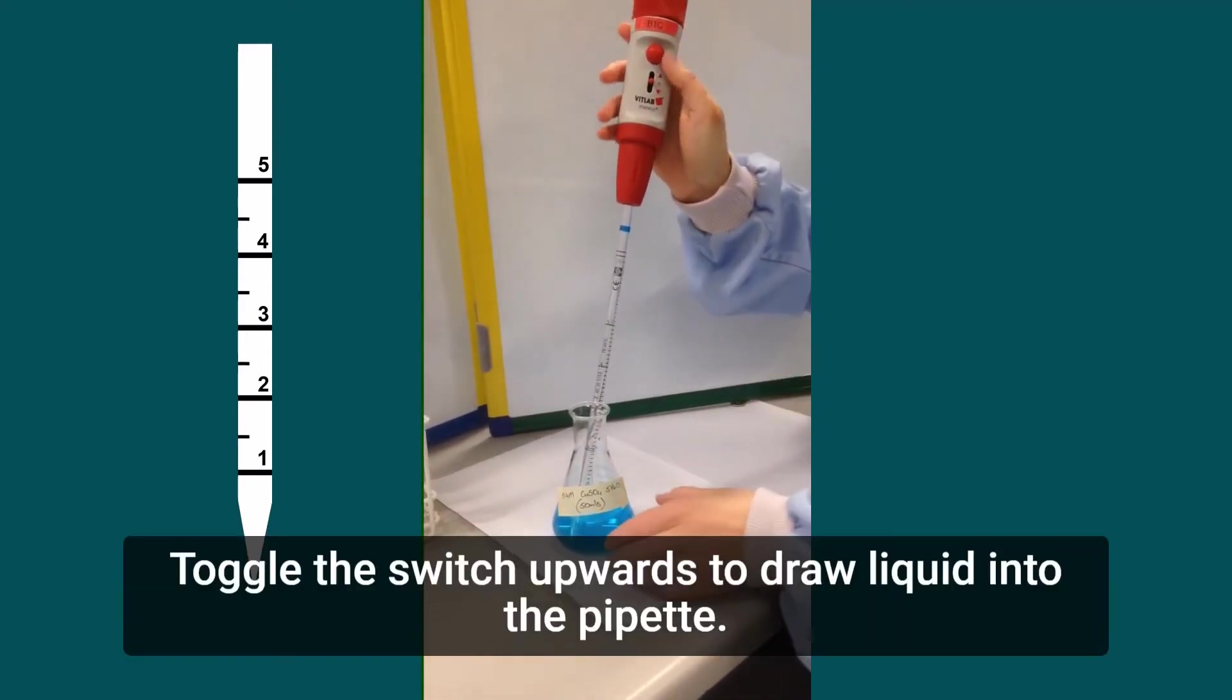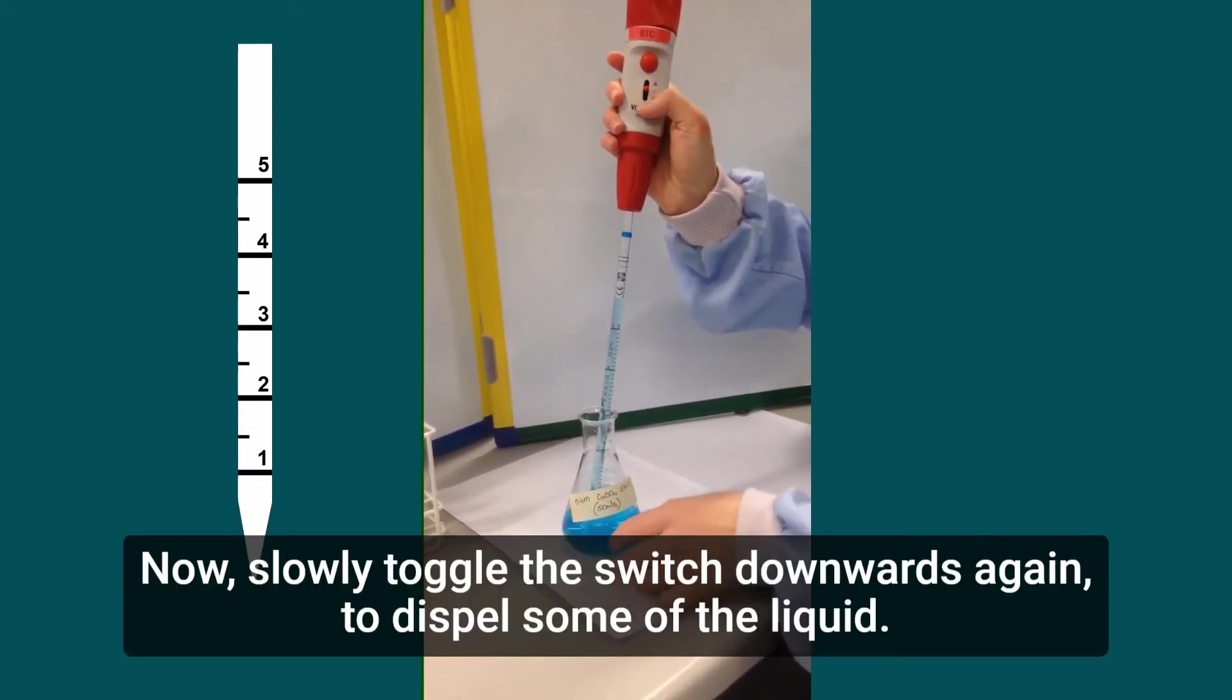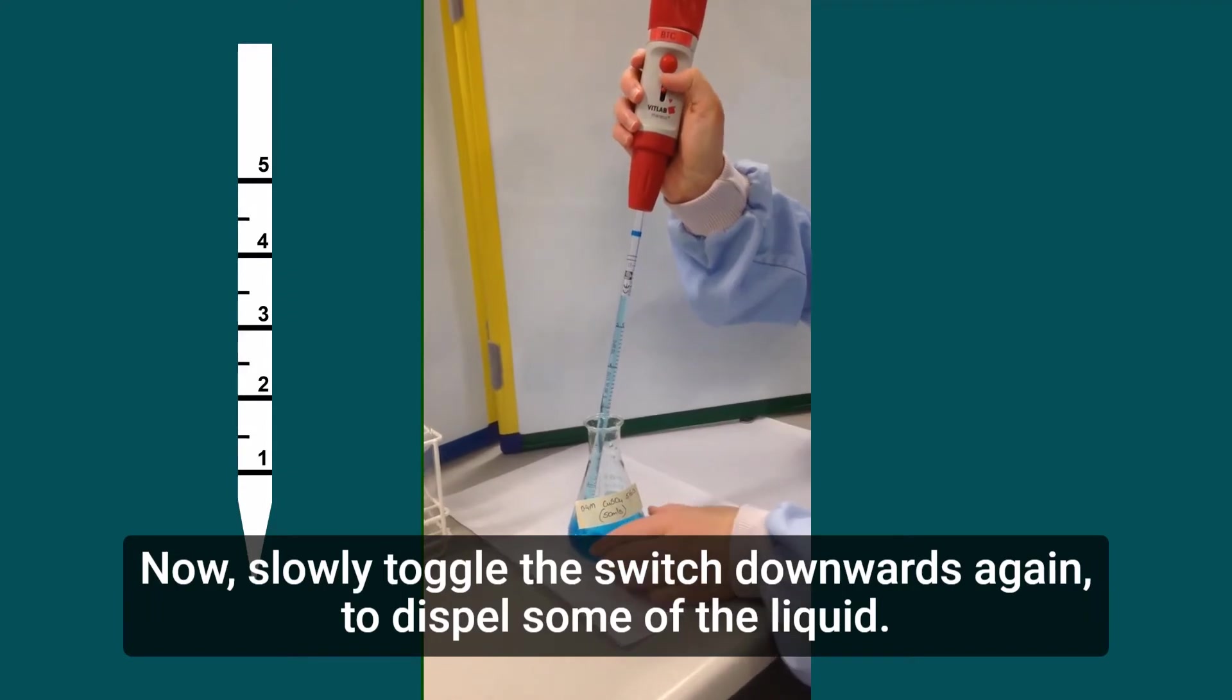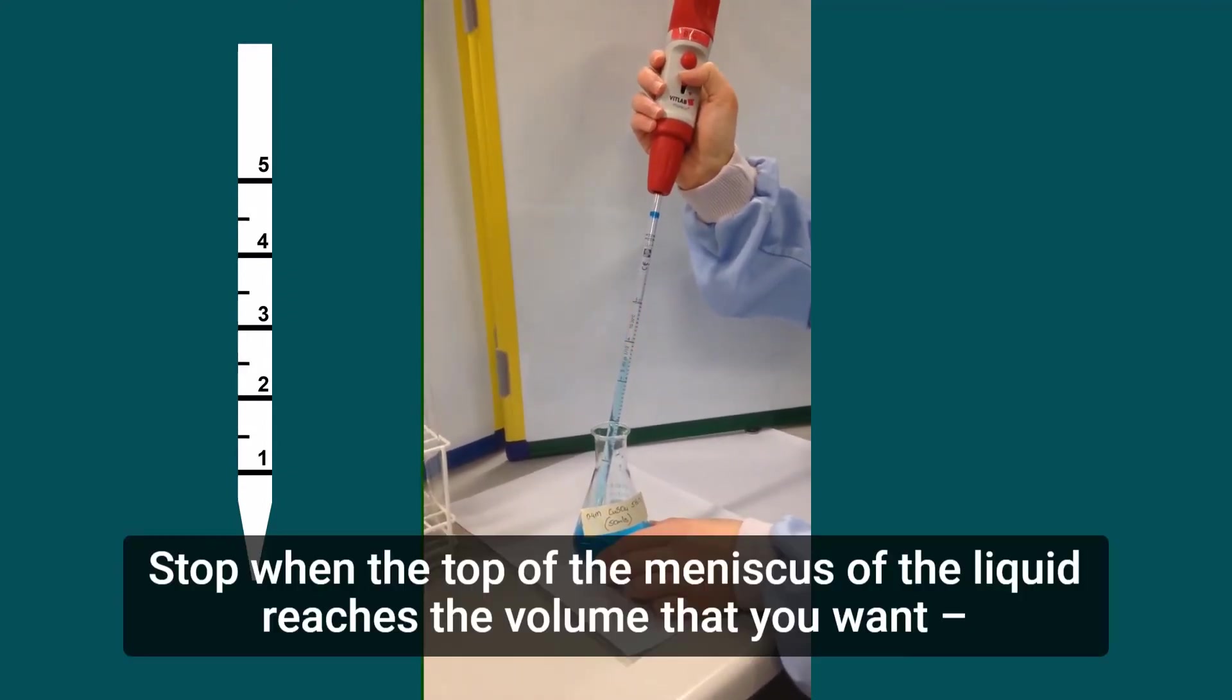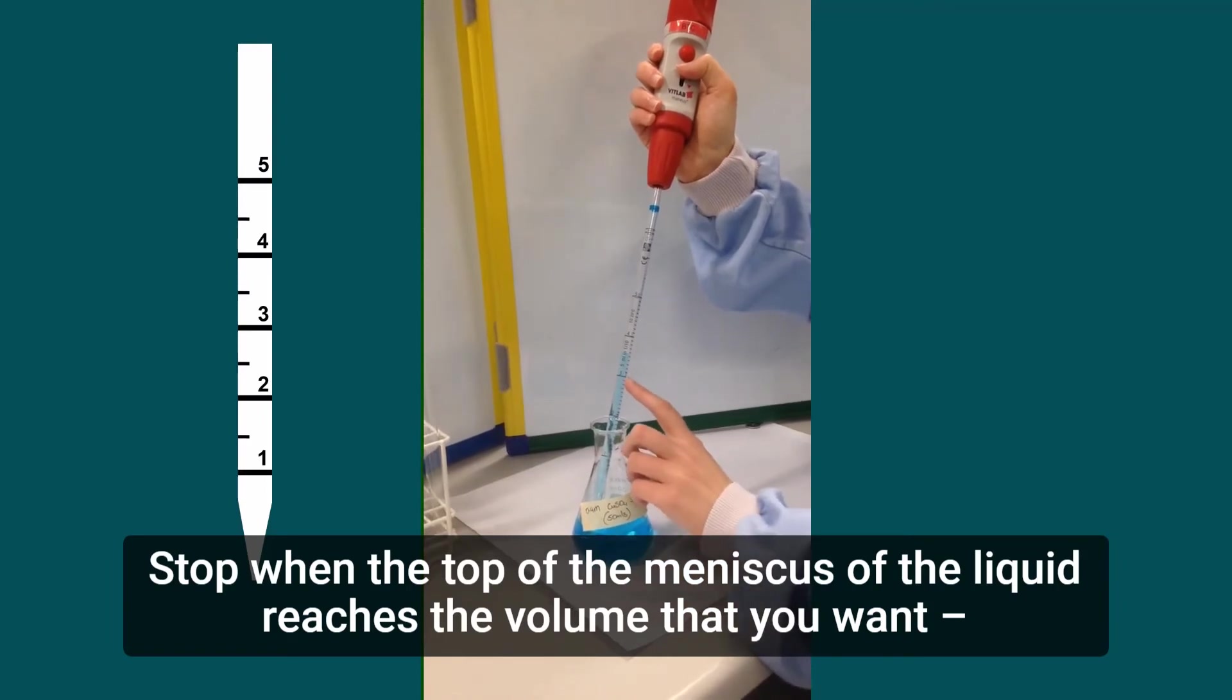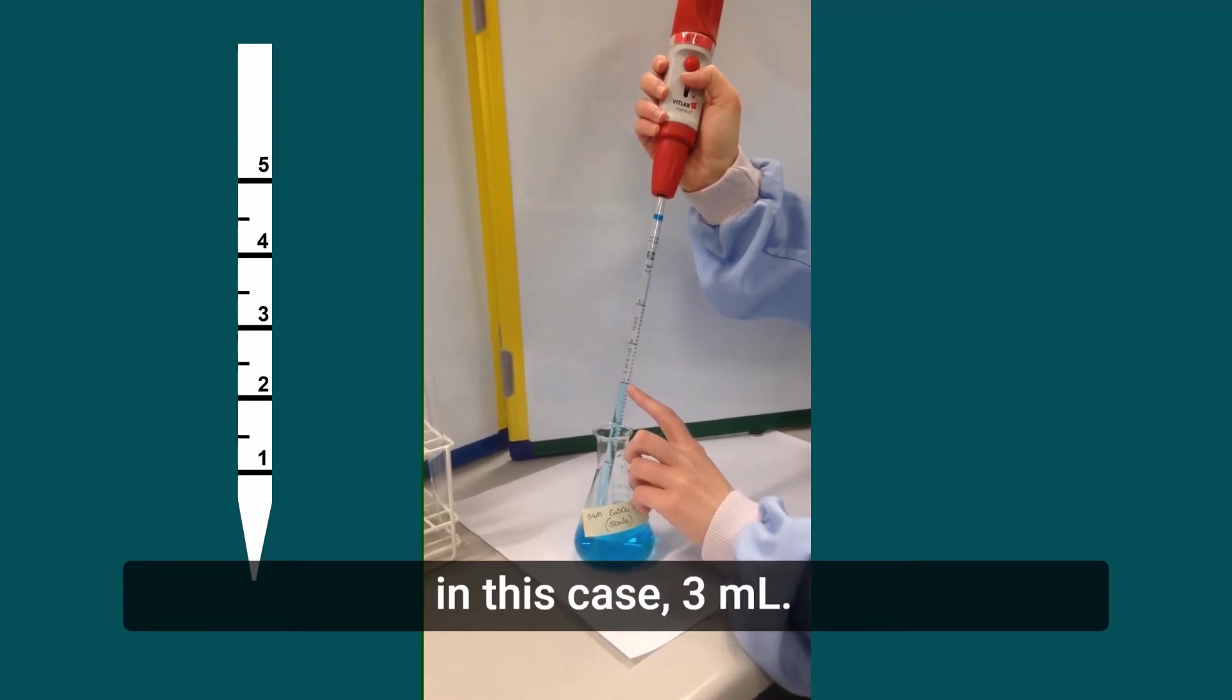Toggle the switch upwards to draw liquid into the pipette. Now slowly toggle the switch downwards again to dispel some of the liquid. Stop when the top of the meniscus of the liquid reaches the volume that you want, in this case 3ml.